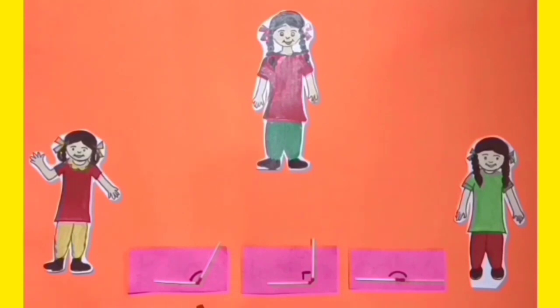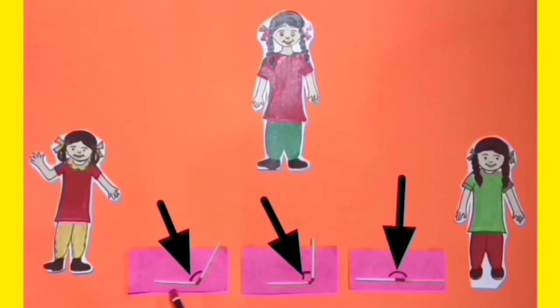Now Daljeet tells that the figures which you have made have different angles. Manjeet and Ranjeet ask her, Sister, what is an angle? Daljeet explains that the point where both maths tricks join together, an angle is formed. Manjeet says, okay sister, that is why our closed figures were different because their angles were different.